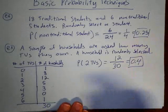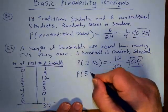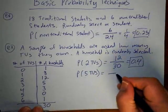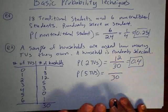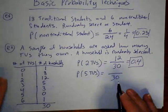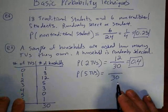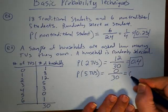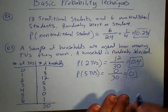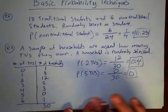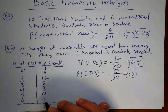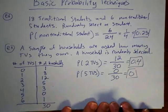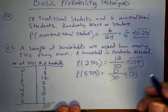We could ask other questions. What about the probability of 5 TVs? The total number of outcomes is still 30. Looking at the table, 0 households had 5 TVs, so the probability is 0 out of 30, which equals 0. That's an impossible event — none of the names in the hat would have 5 TVs, so this event is impossible.